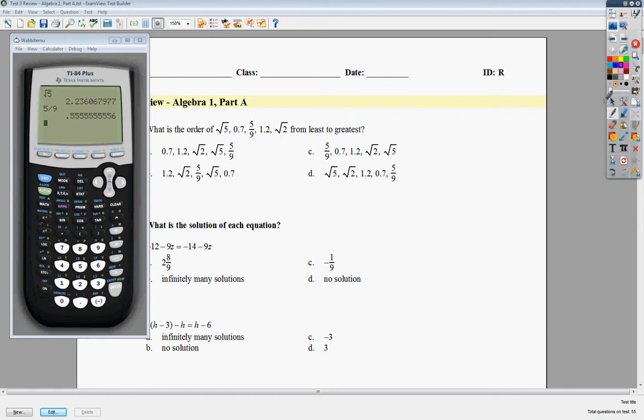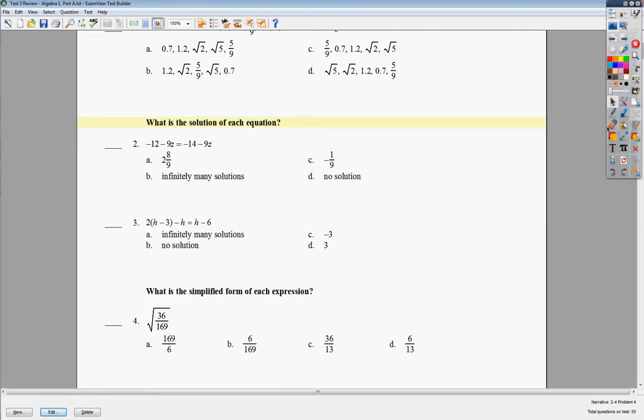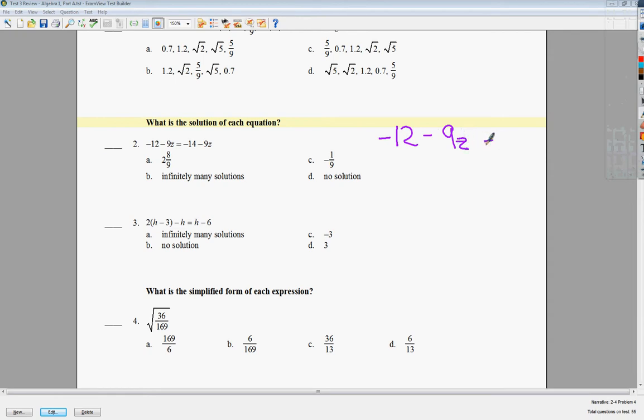The next one, they want to know which one has, what's the solution to this equation. They basically just want you to solve it. Sorry, I'm kind of rambling today. So, negative 12 minus 9z is equal to negative 14 minus 9z. Don't freak out and automatically pick infinitely many solutions or no solutions. Sometimes it's actually not that. It might be here. I'm not saying that it isn't. In fact, I'm pretty sure that it is. But it doesn't necessarily end up that way just because it's one of the answer choices.